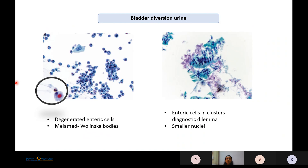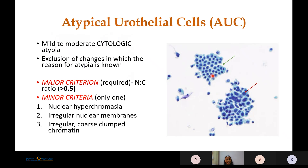In bladder diversion procedures such as an ileal conduit or neobladder formation, where the ileum has been anastomosed with the ureters or urethra, we get degenerated enteric cells. These are small round cells with prominent nucleoli and intracytoplasmic inclusion bodies known as Melamed-Wolinska bodies, a characteristic feature of bladder diversion urine. Enteric cells in clusters may look atypical but are columnar type with smaller nuclei and no nucleomegaly.